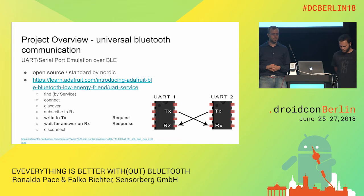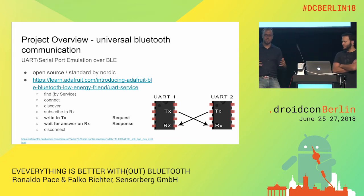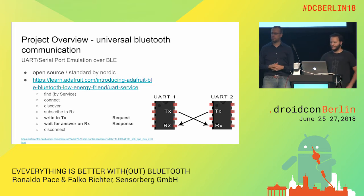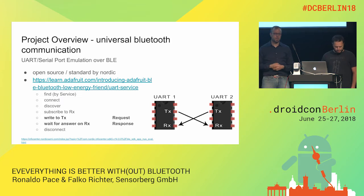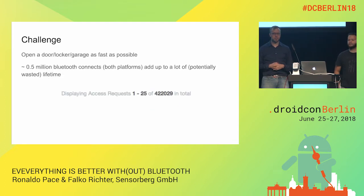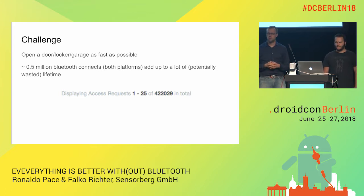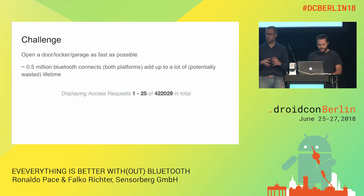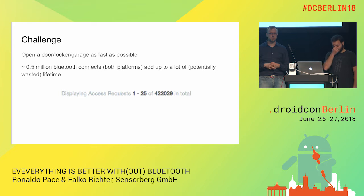In order to open something or interact as fast as possible, you always need to do these steps: find the device, connect, discover services, subscribe to the receiving channel, write to the transmitting channel, wait for your answer, and then disconnect. This has been our challenge over the last year to optimize. Speed is key — imagine every door you go to, if you waste time, that adds up. We've collected data doing over 400,000 Bluetooth connects on both platforms. The goal was to be sub-two seconds for the whole round trip — tap, and after two seconds at the latest, the door opens.